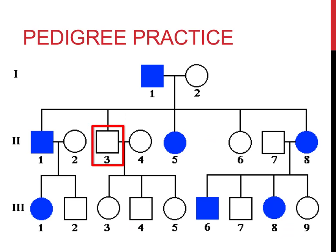Question number 5: is Roman numeral II, 3 related to Roman numeral II, 8 by blood? Here is the individual identified as Roman numeral II, 8. Both individuals are connected by vertical lines, indicating that they are brother and sister.